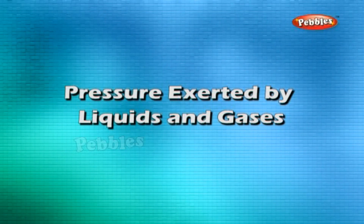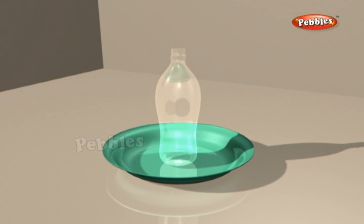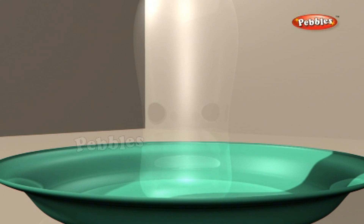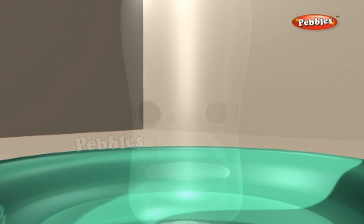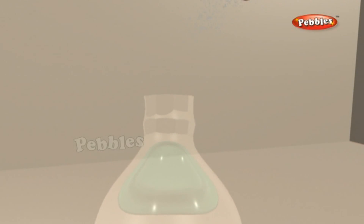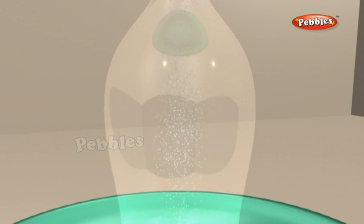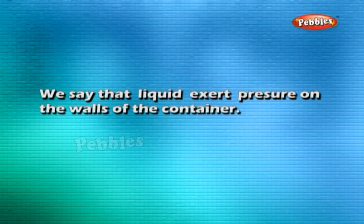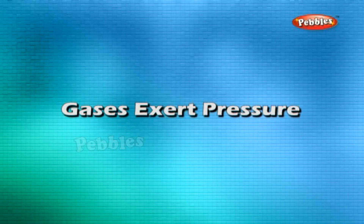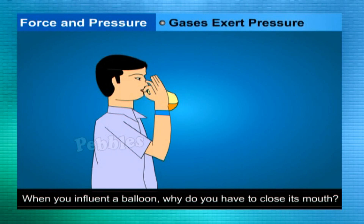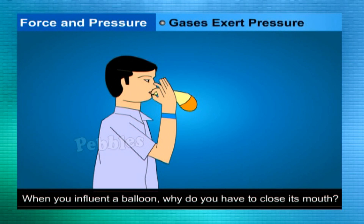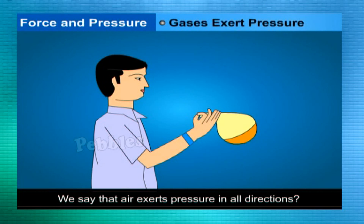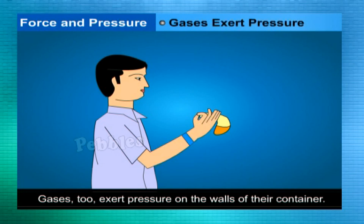Take an empty plastic bottle or cylindrical container and drill four holes all around near the bottom at the same height. Fill the bottle with water. The different streams of water coming out of the holes fall at the same distances from the bottle, showing that liquids exert equal pressure on the walls of the container. When you inflate a balloon, you have to close its mouth to keep the air in. When you open the mouth of an inflated balloon, the air is let out. We say that air and gases exert pressure in all directions on the walls of their container.